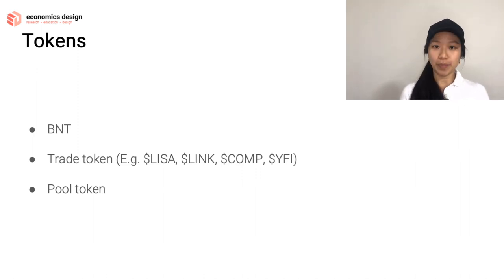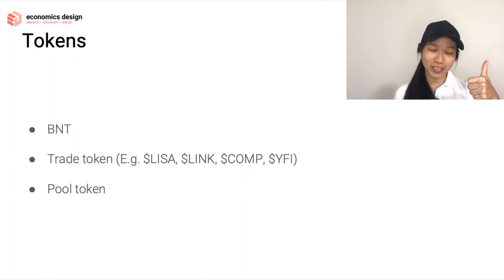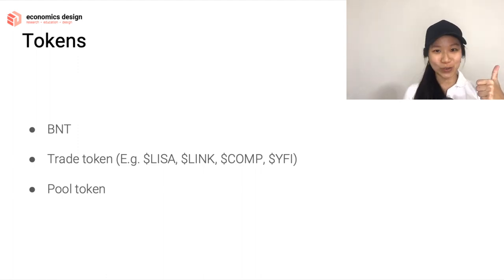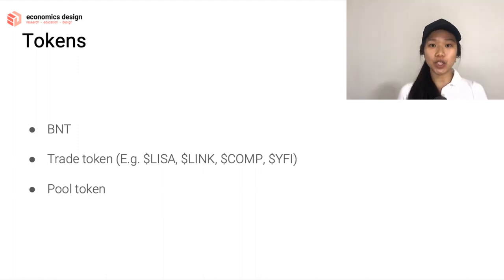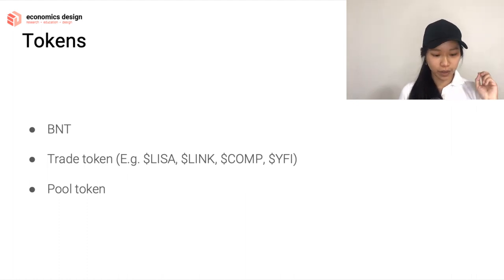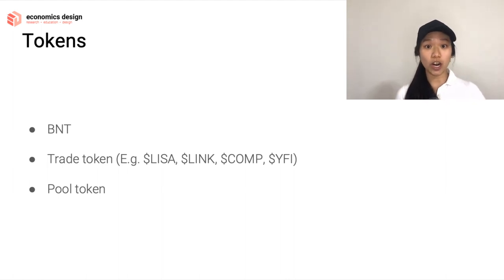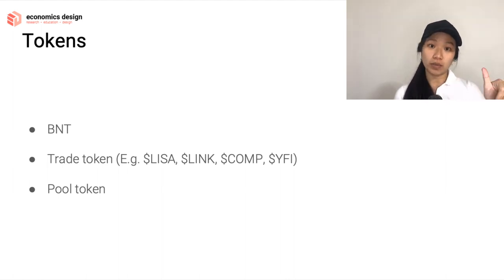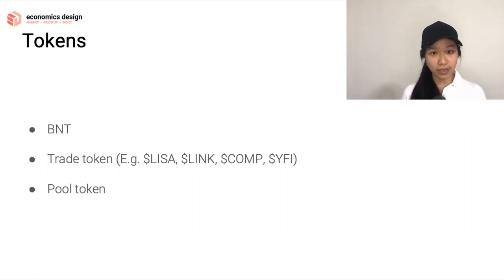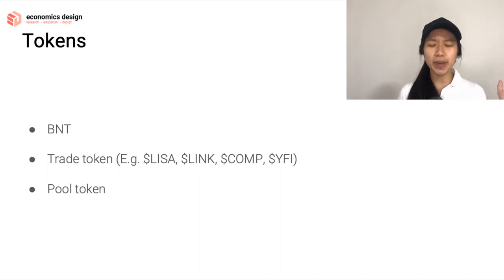What are the tokens in Bancor? There are three. The first is the BNT token — a native utility token within the ecosystem that facilitates transactions between different kinds of tokens in different liquidity pools, and it can also cross-chain across different layer-1 liquidity pools. Then we have the trade token — the token you want to trade. In the cookie jar analogy, you have the BNT cookie and another cookie you'll be trading, which could be the LISA token, LINK, COMP, YFI, or any token.